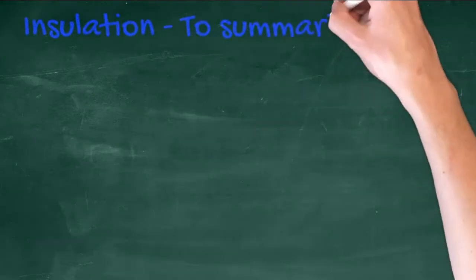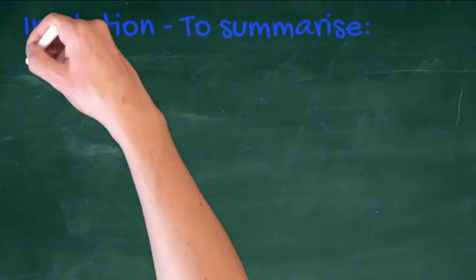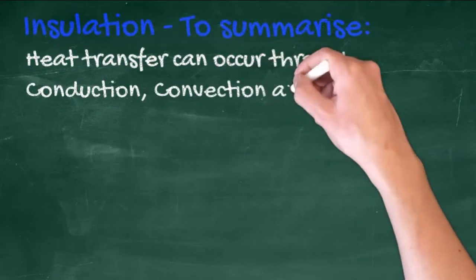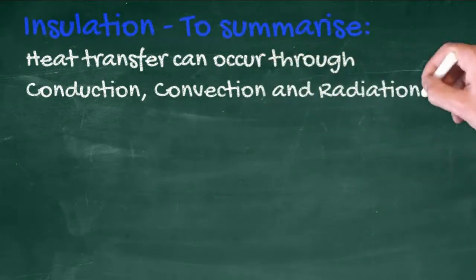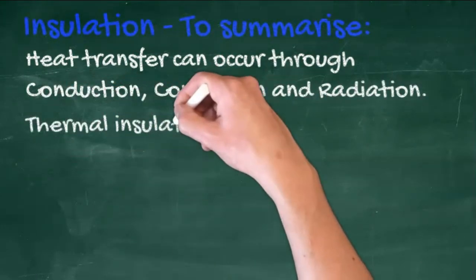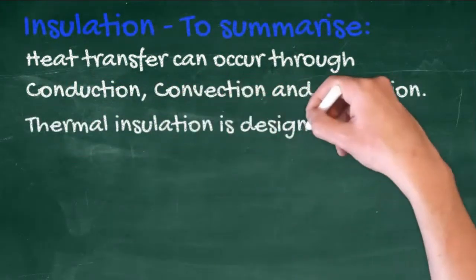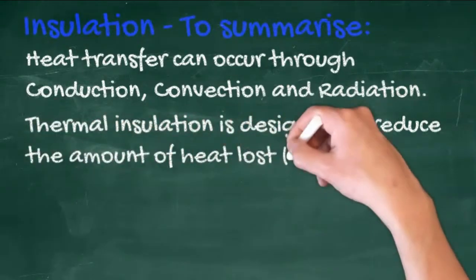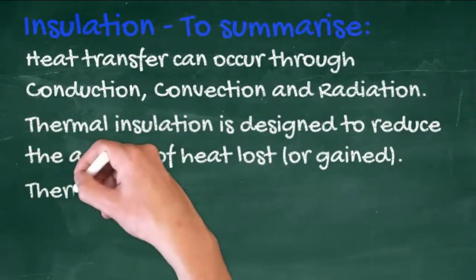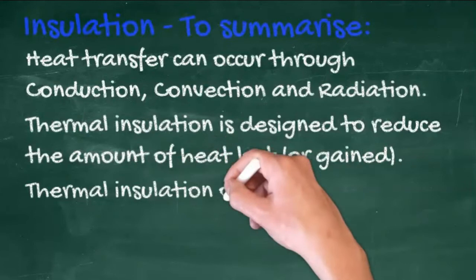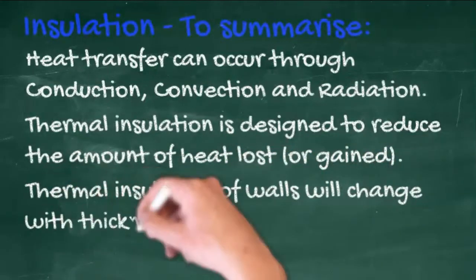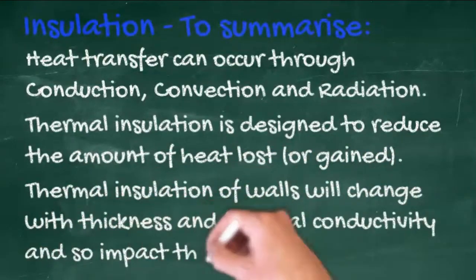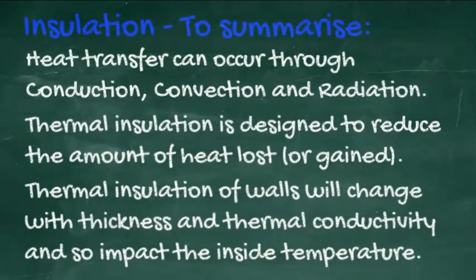To summarise: heat transfer can occur through conduction, convection and radiation. Thermal insulation is designed to reduce the amount of heat lost or gained. Thermal insulation of walls will change with the thickness and the thermal conductivity of the insulator, and so impact on the inside temperature.